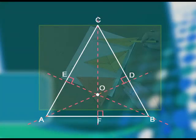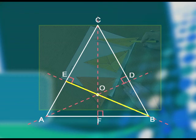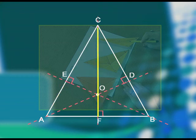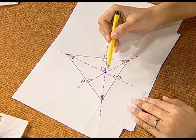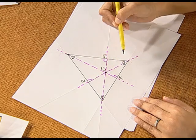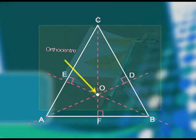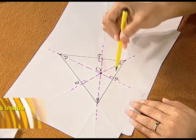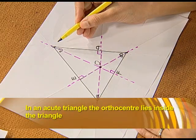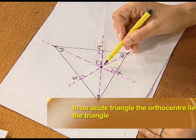In triangle A B C, where A B C is an acute triangle: A D is perpendicular to side B C, B E is perpendicular to side A C, and C F is perpendicular to side A B. The three altitudes meet at a common point called the orthocenter. In an acute triangle, the orthocenter lies inside the triangle.